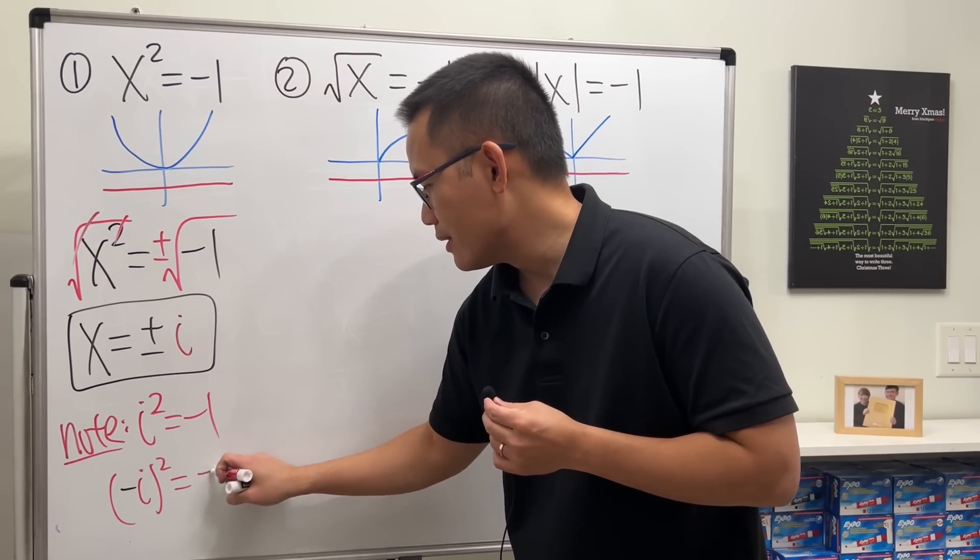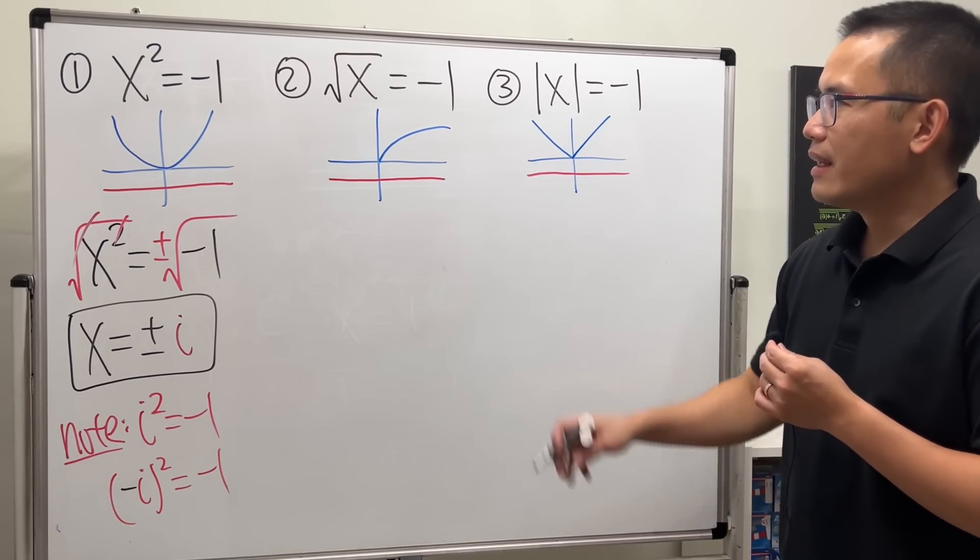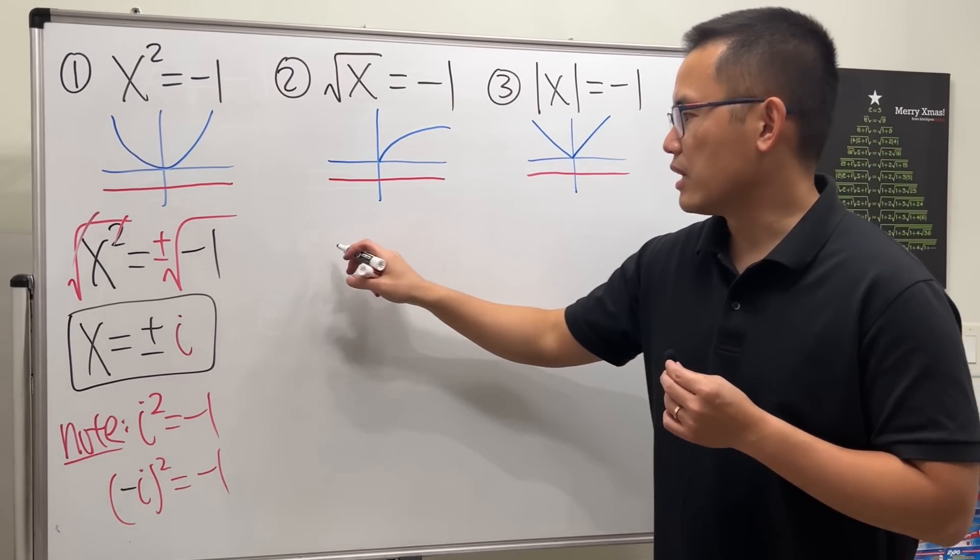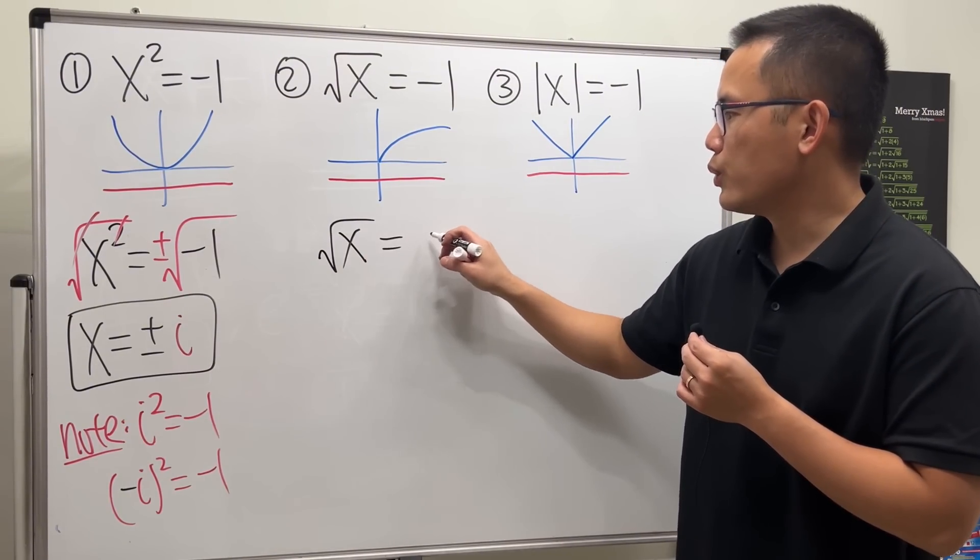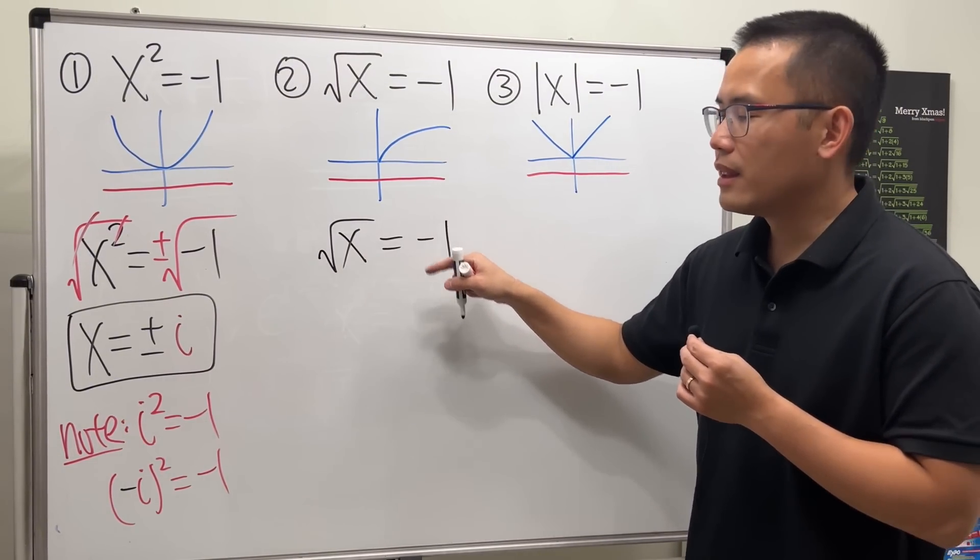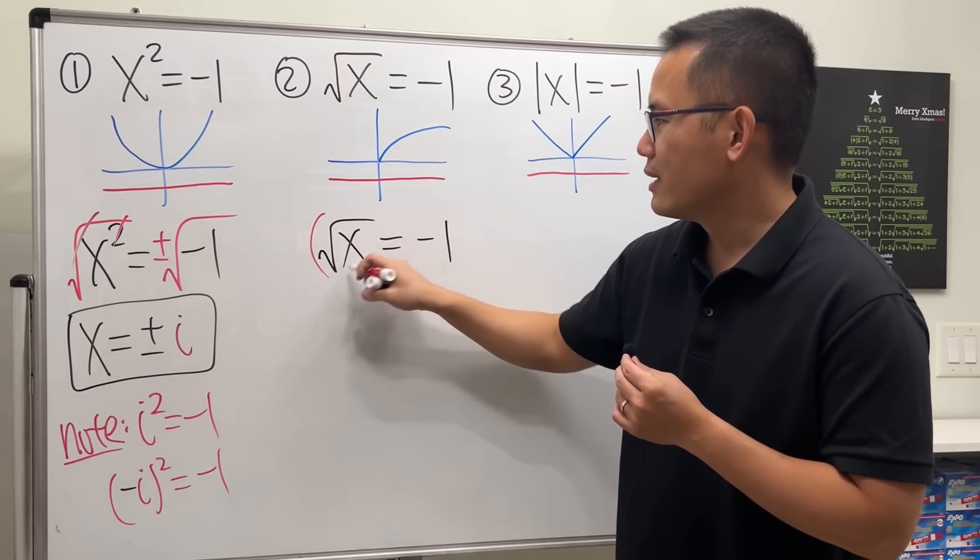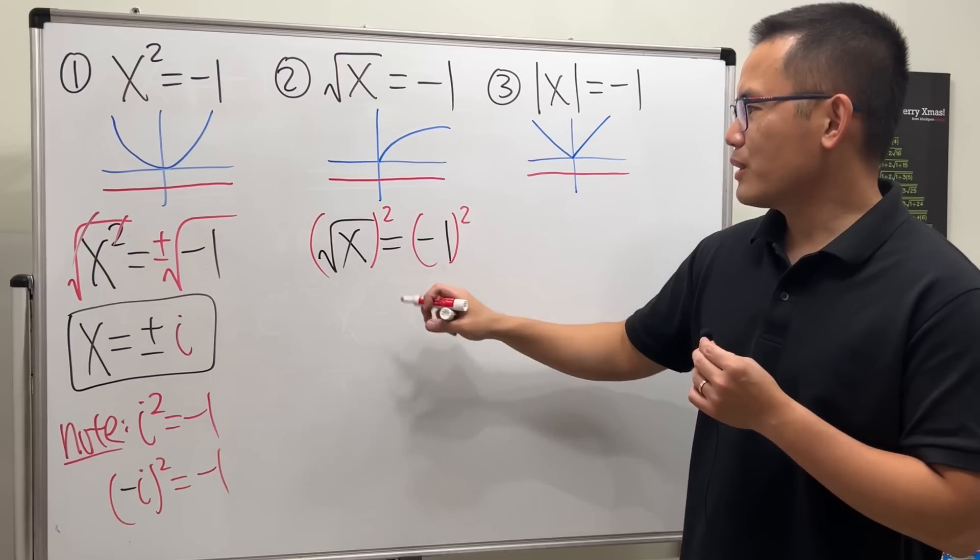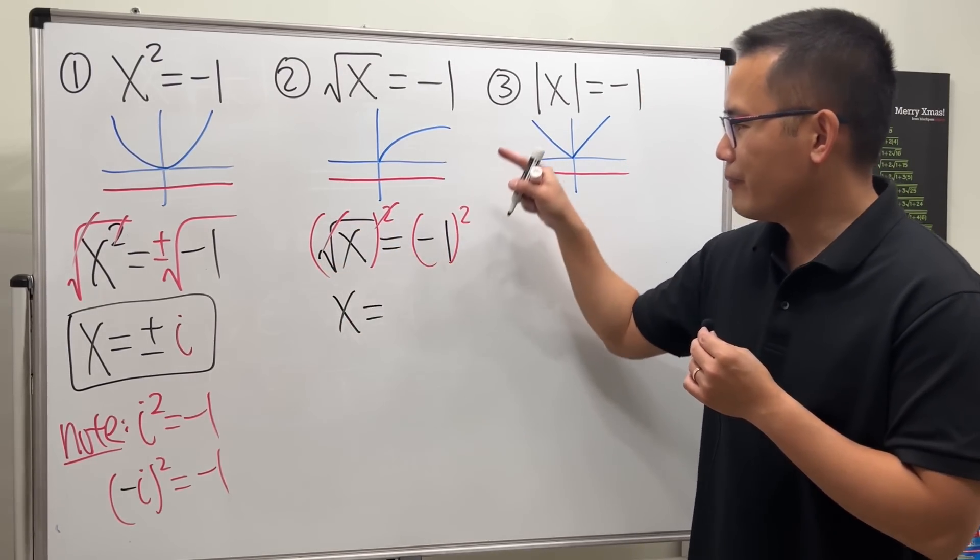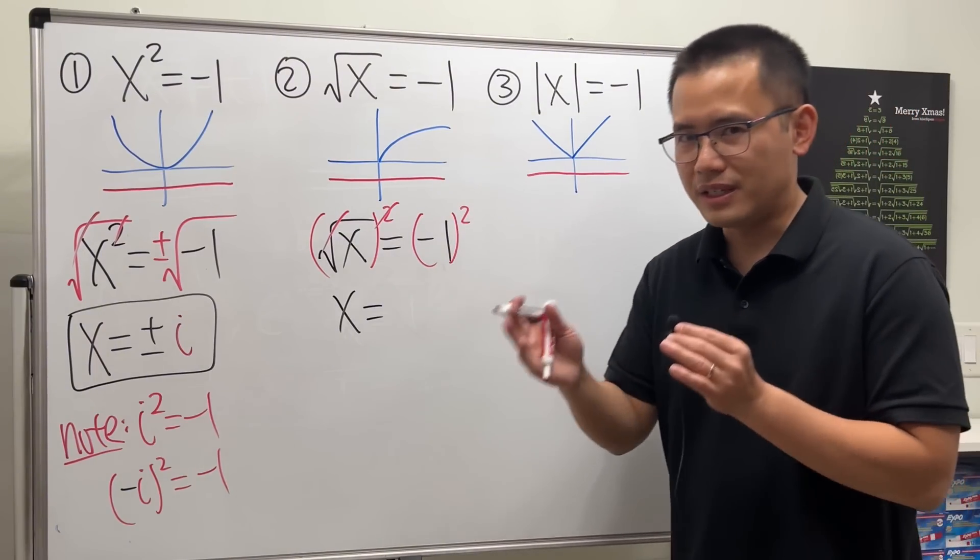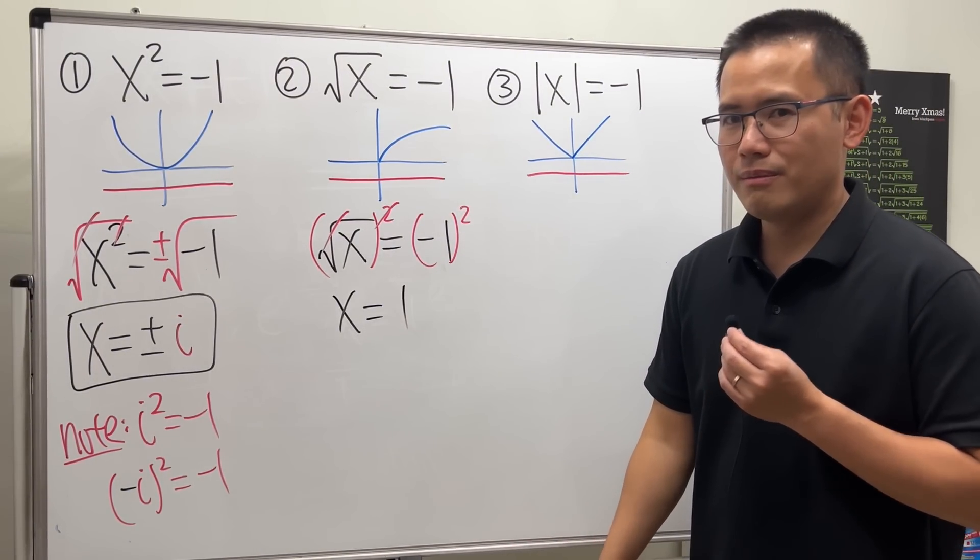So these are the solutions for that equation. But for the second one, check this out. If you attempt to solve square root of x is equal to negative one, how do we get rid of the square root? Square both sides, right? Okay, let's square both sides. It looks okay, because this cancels and then we just get x equals negative one squared, negative one times negative one, so we should just get one.